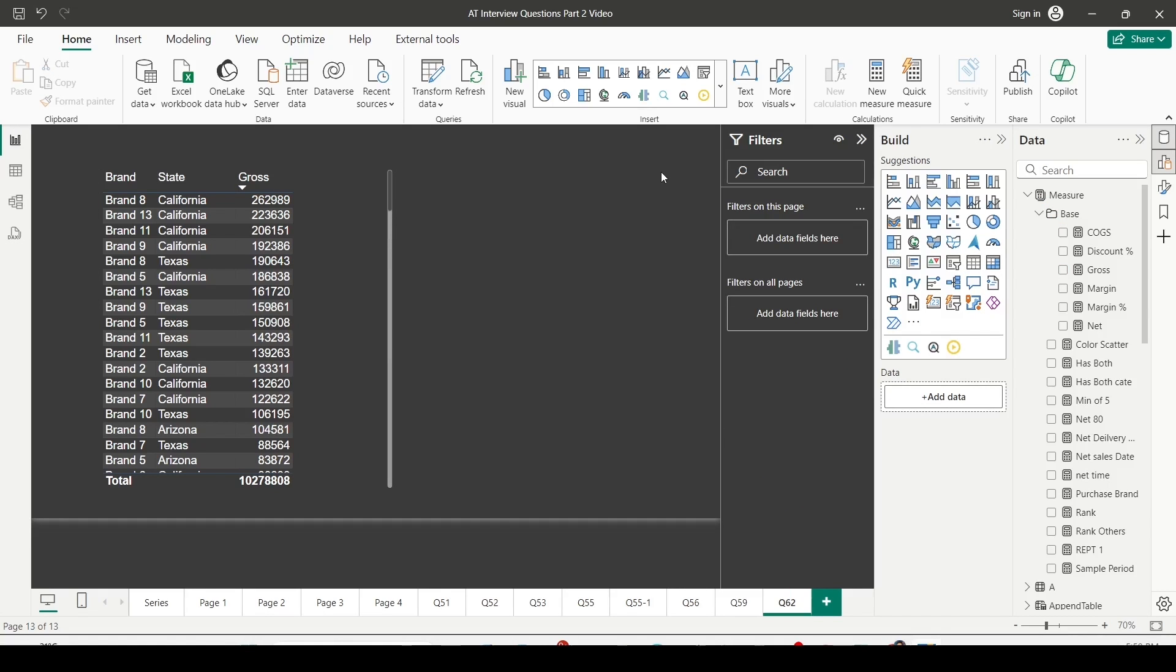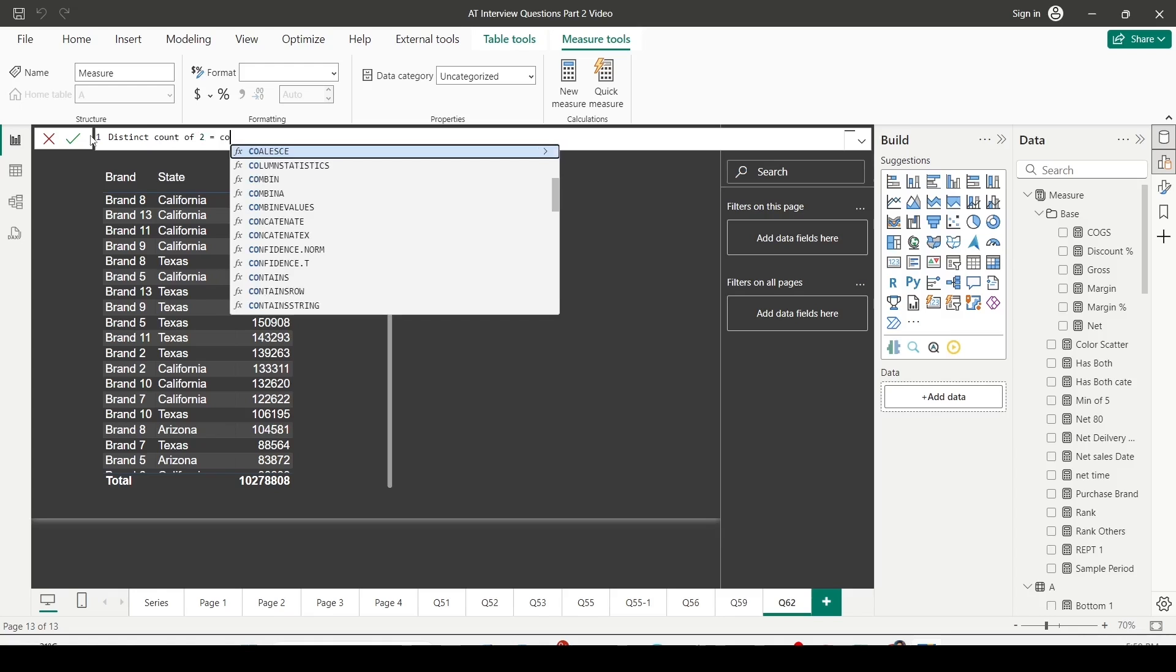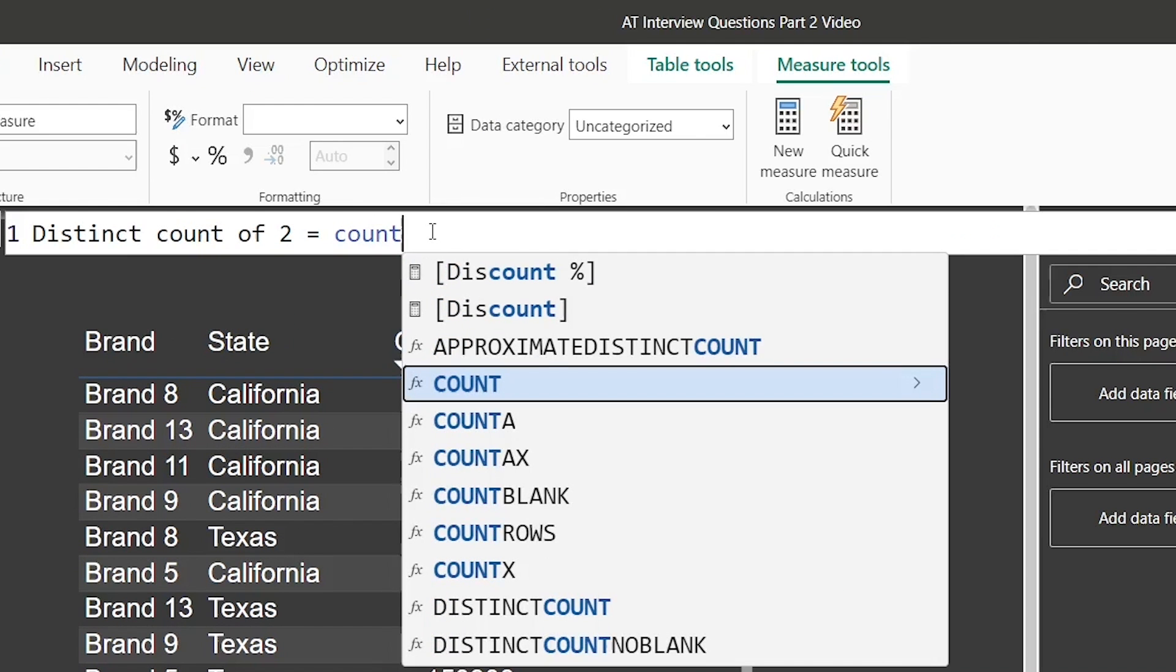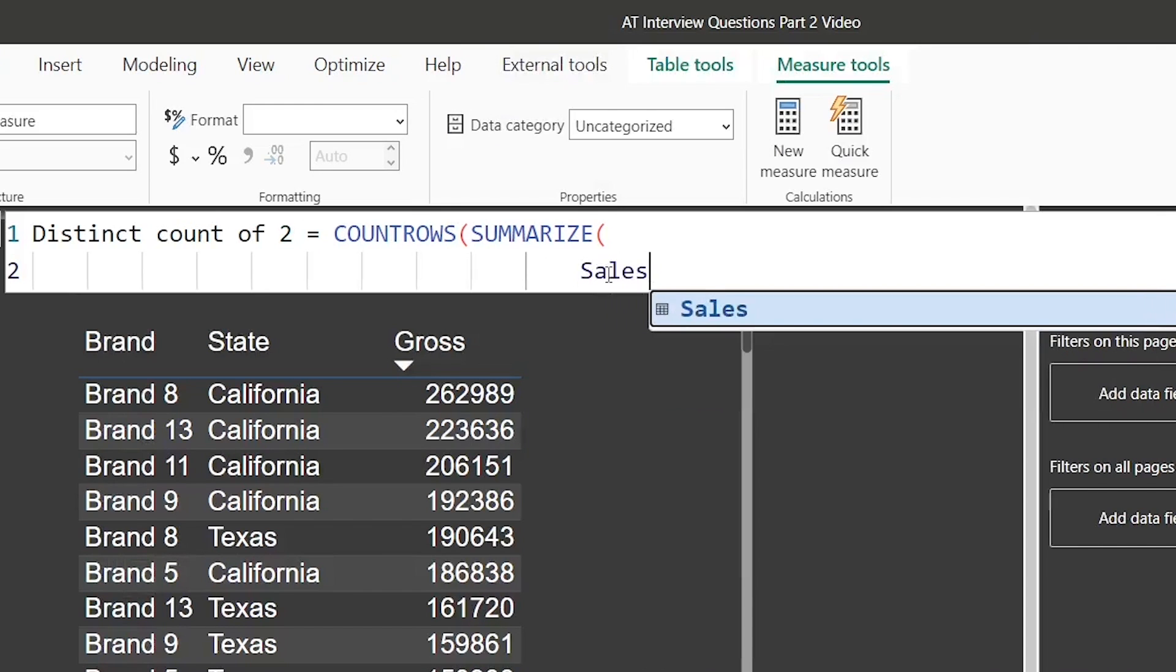Now what is the count of that distinct combination of brand and state? For that, I'm going to create a measure. To create a measure, I can see New Measure option under the Home tab. I click on that and let's name it as Distinct Count of Two. We will use COUNT ROWS. Let me make it a little bit bigger so that you can see it. COUNT ROWS, SUMMARIZE - here Sales is my center table, Sales.